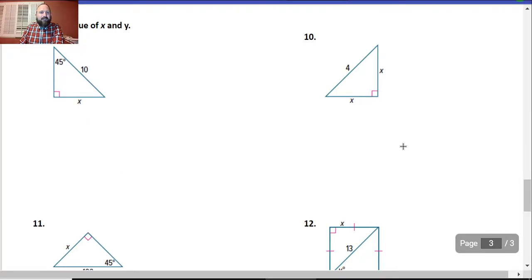Alright, let's go on. Find the value of x and y. Now, if there's no x, oh well, don't worry about it. Well, looking at this, it looks like I know that my hypotenuse is equal to the leg times radical 2. Okay, well, I know my, I don't know my leg, so I'm going to say x radical 2 is equal to 10.